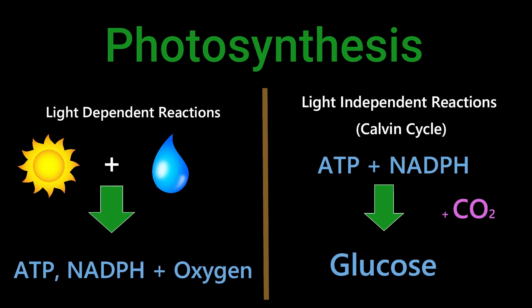First, let's begin with an overview of photosynthesis. Photosynthesis takes place in two parts: light-dependent reactions and the light-independent reactions, also called the Calvin cycle.